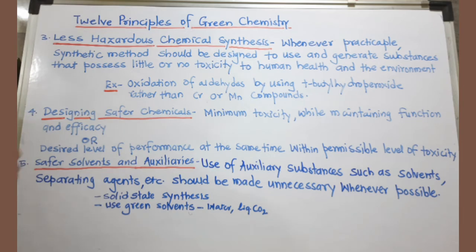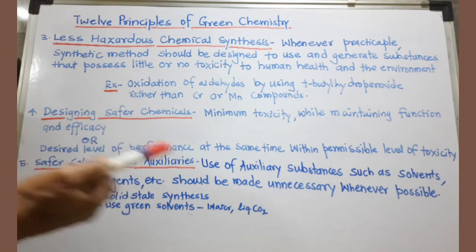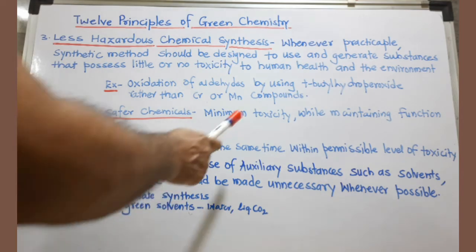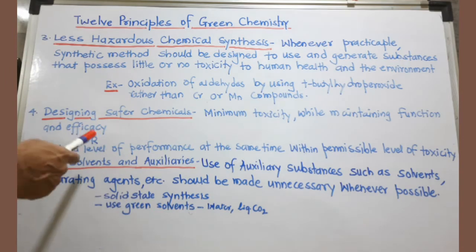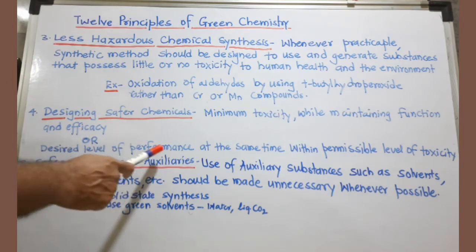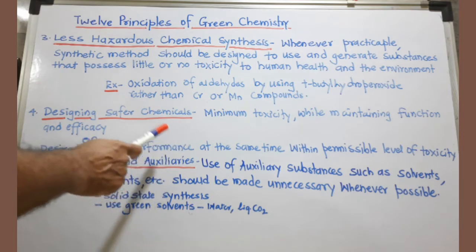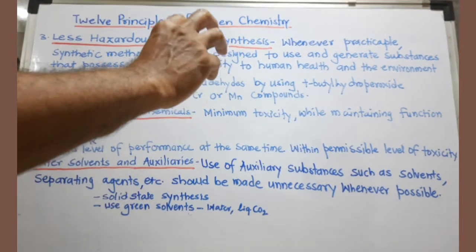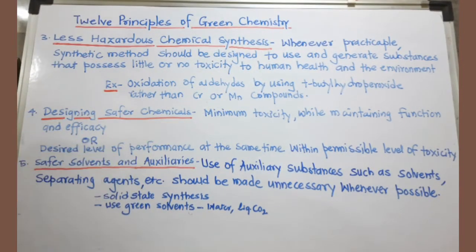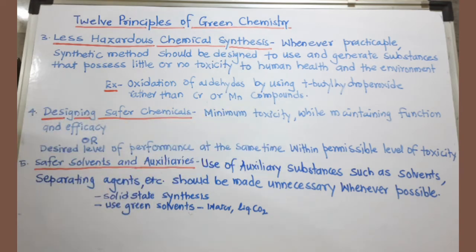The fourth principle is designing safer chemicals. We must minimize toxicity while maintaining the function and efficacy of the chemical — in other words, the desired level of performance should not be hampered, but toxicity must remain within permissible levels. Smaller toxicity but greater performance is the kind of design required.